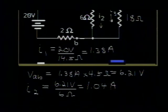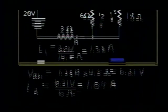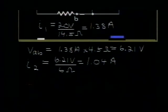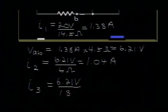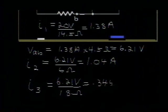The value for I3, we do exactly the same thing with our 18 ohm resistor. This is 6.21 volts, divided by 18 ohms, and this, the three significant figures is 0.345 amps. So that's I3.